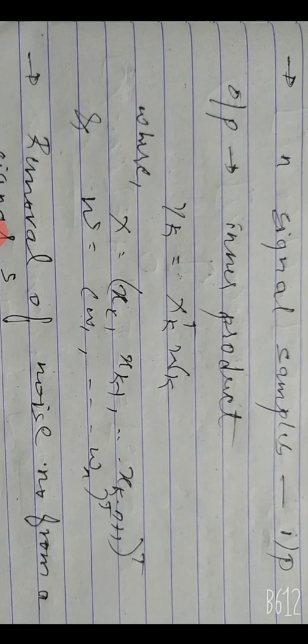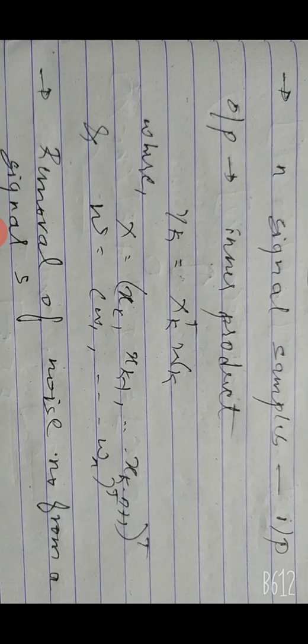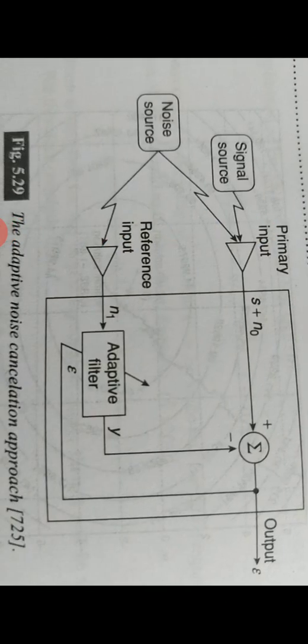The input is n signal samples, and the output is the inner product y(k) = x(k)ᵀ · w(k), which we have already seen in previous classes. Here x is the input and w is the weight. Our main aim is to remove noise from the signal using the adaptive noise cancellation approach.